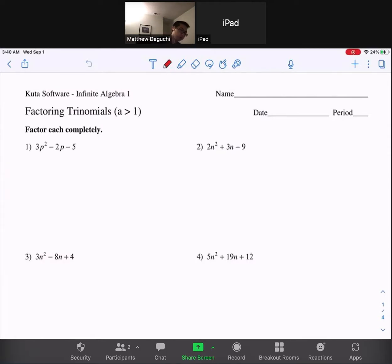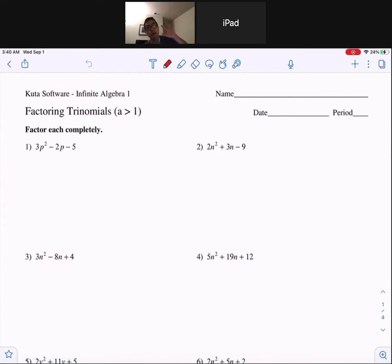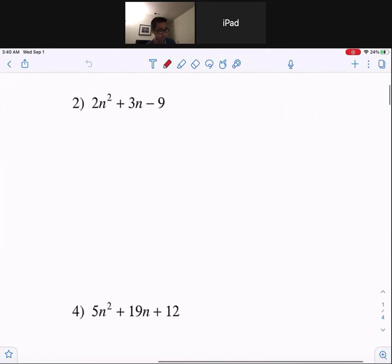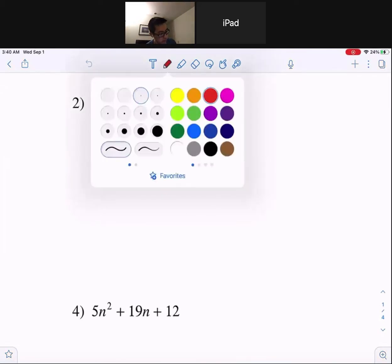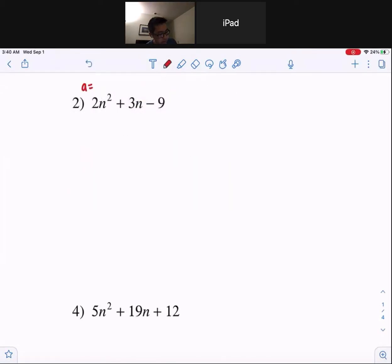Here is your guys's homework number five help video. So one of them I'm going to look at is number two. First thing to notice is a is 2, b is 3, and c is negative 9.